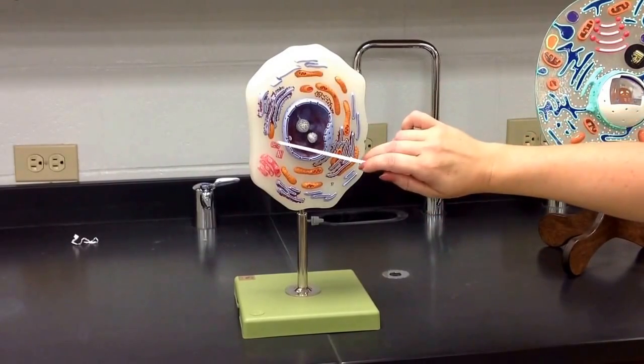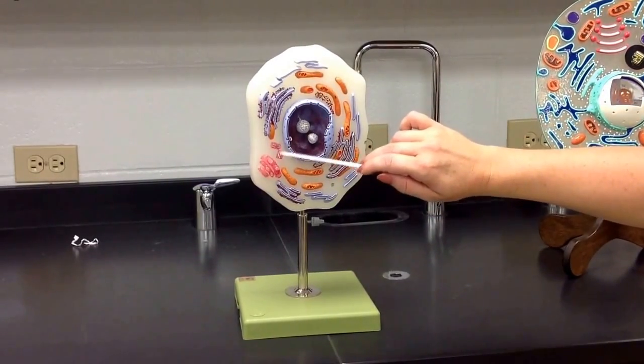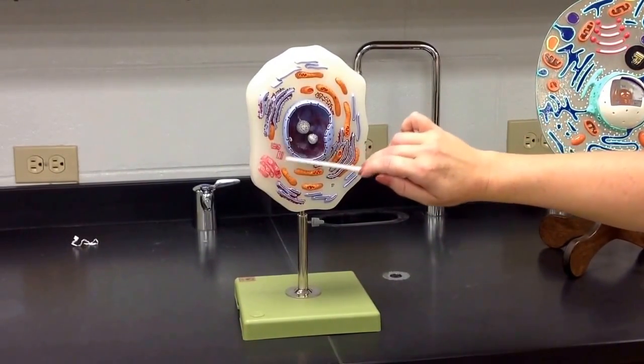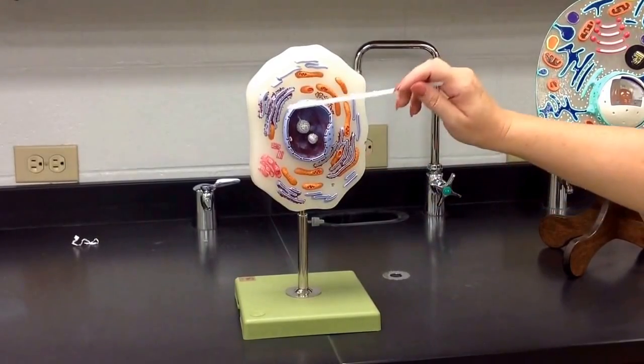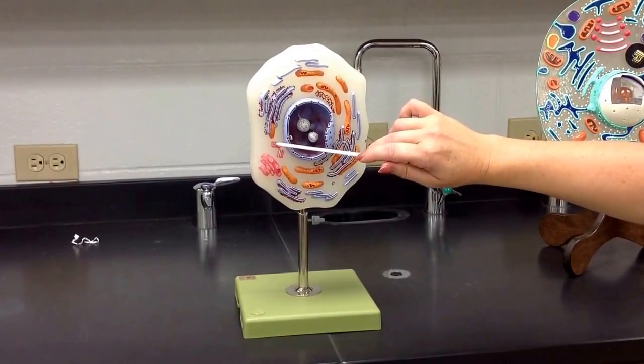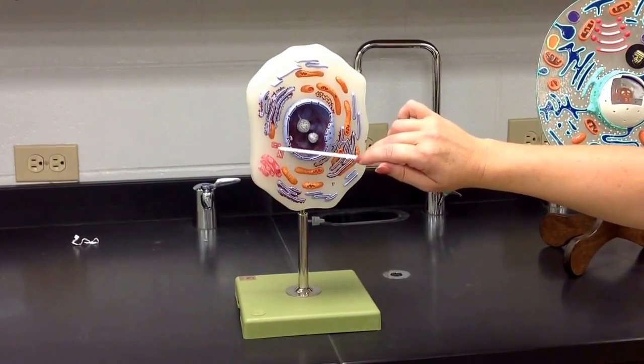And then over here we have your centrioles here. This one does not show the centrosome. It just shows the centrioles. Those are always in pairs, in perpendicular pairs.